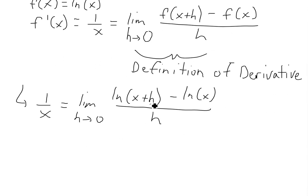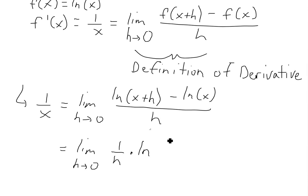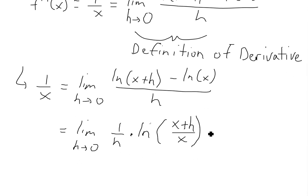We can simplify this further using log laws and their properties — see the video links below. The subtraction of two logarithms lets us write ln(x+h) minus ln(x) as ln of the quotient. So we get the limit as h approaches 0 of 1 over h times ln of x plus h divided by x.